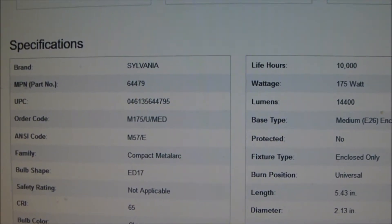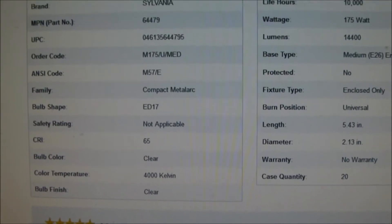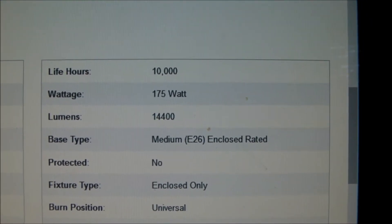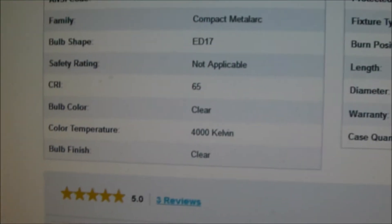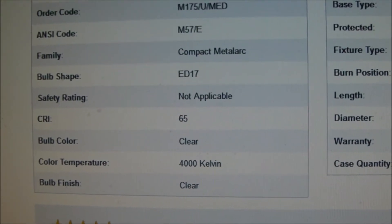So here are the specs of a 175 watt metal halide lamp. I just grabbed this first set of specs I could find. The thing to pay attention to here is the lumens, 14,400 lumens, and the color temperature, 4000 Kelvin. So that's what I'm going to try to match up.